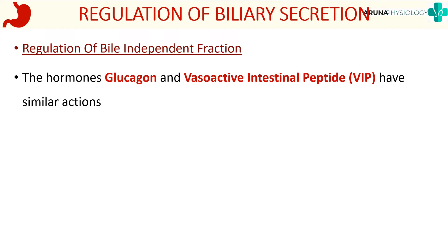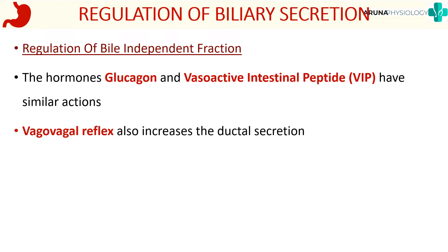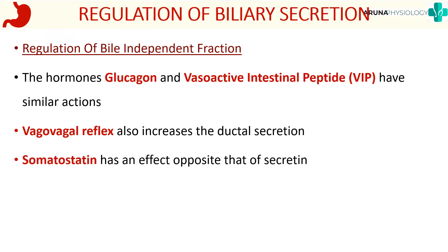Some books also mention that the vago-vagal reflex, mediated by the vagus nerve, increases ductal secretion of bile, though not everyone supports this idea. Another hormone, somatostatin, inhibits the action of secretin. So the bile independent fraction is regulated mainly by secretin, with glucagon and VIP having similar actions, and somatostatin inhibiting it. That completes the first part: regulation of biliary secretion.